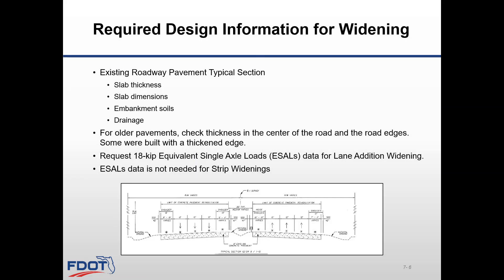For widening, the existing roadway pavement typical section needs to be researched. This could include information such as slab thickness, slab dimensions, embankment soils, and drainage. For older pavements, check thickness in the center of the road and the road edges, as some were built with a thickened edge. Request 18-kip ESAL data for lane addition widening to assist the evaluation of the remaining life of the existing pavement and the thickness desirable for the design lane. For strip widening, the 18-kip ESAL calculations are not necessary.